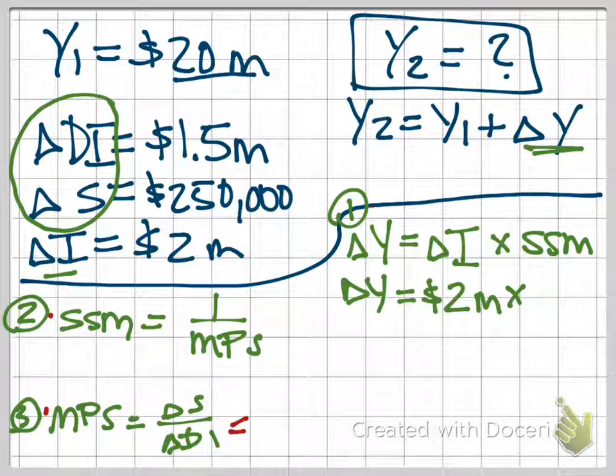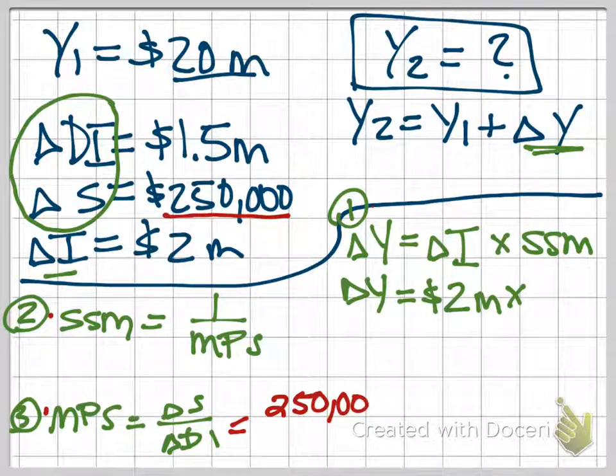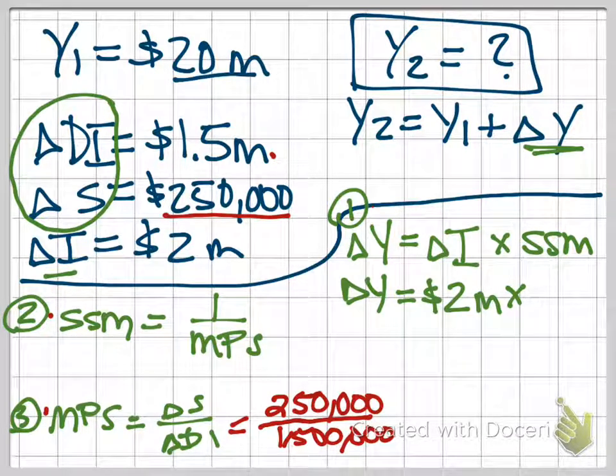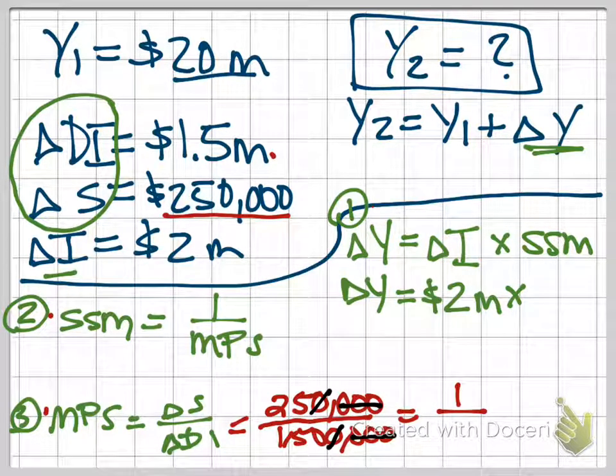So my change in savings, that's the $250,000. I'm going to write out all my zeros this time so I can reduce. Divided by the $1.5 million. Change in disposable income. So I'm going to get rid of these three zeros and these three and one more zero. So I'm left with 25 over 150. The math is not hard. I have one quarter on top. How many quarters are in $1.50? There are six of those. So this, 1/6, that's my MPS.